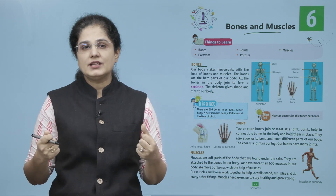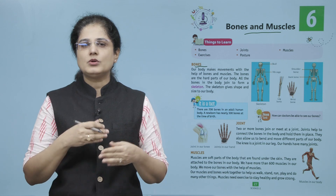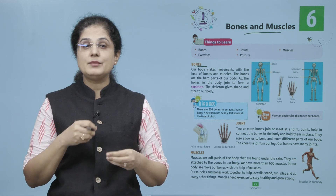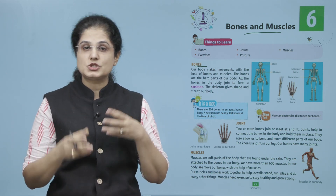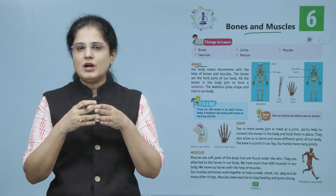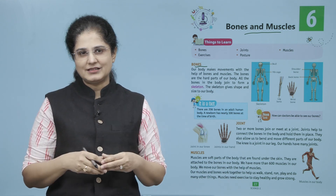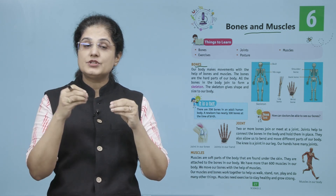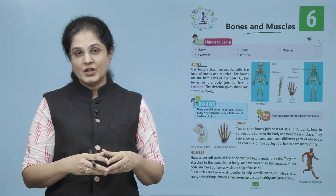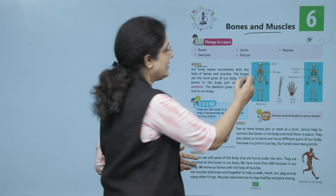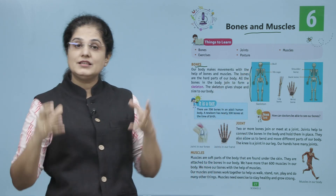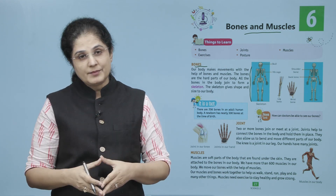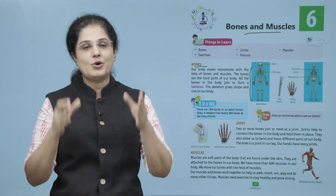ہماری body کے اندر بہت ساری ہڈیاں ہوتی ہیں اور ان ہڈیوں کے اوپر muscles ہوتے ہیں۔ انہی muscles کی وجہ سے ہماری body move کر سکتی ہے۔ جو bones ہیں وہ ہماری body کے سب سے hard part میں آتے ہیں۔ یہ bones آپس میں joints کے through ایک دوسرے سے join کرتی ہیں اور مل کر skeleton بناتی ہیں۔ یہ skeleton ہماری body کو shape اور size دیتا ہے۔